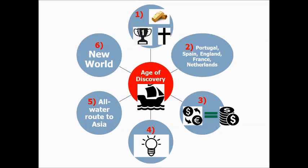We're going to call this the Age of Discovery, also called European Exploration. The driving motivation was Gold, God, and Glory. We're going to focus on five specific countries: Portugal, Spain, England, France, and the Netherlands. The major purpose was that monarchs wanted to get wealthy through trade — trade equals wealth. You had to have certain technology to explore the world. The main goal was to find an all-water route to Asia, which ultimately led to the discovery of the New World: North America and South America.